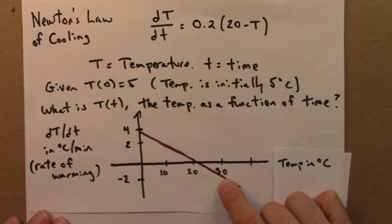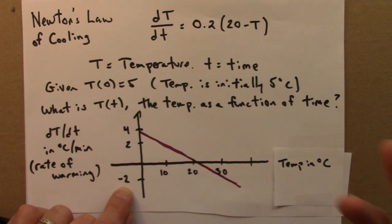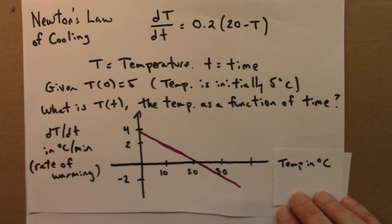If we had something at 30, maybe a warm cup of tea, then its derivative, its rate of change, according to this function, is minus 2. So, it's warming up at minus 2 degrees per minute, or you would say it's cooling off at 2 degrees per minute. Its temperature is decreasing at that instant at 2 degrees per minute.